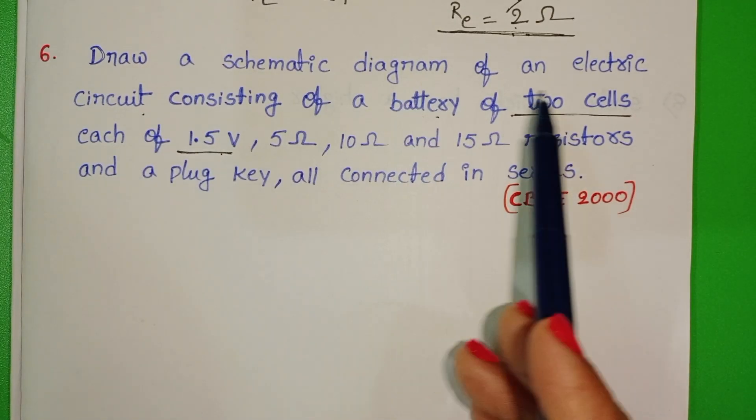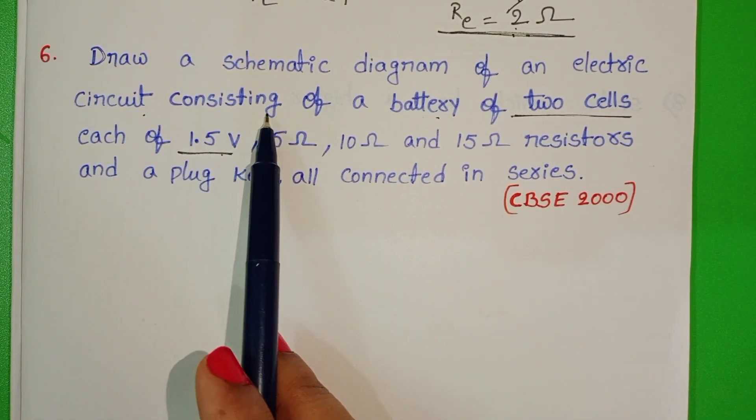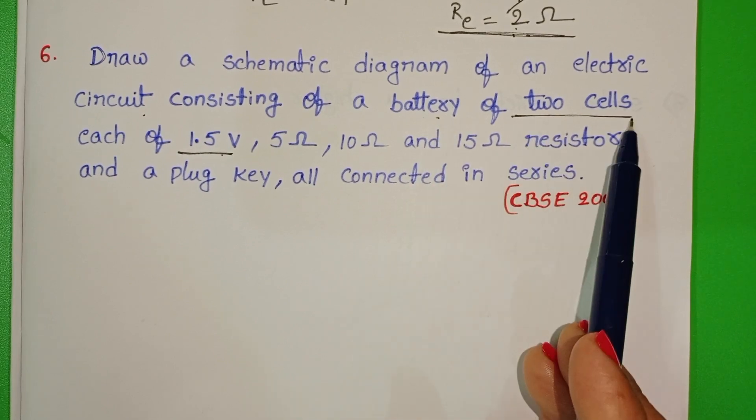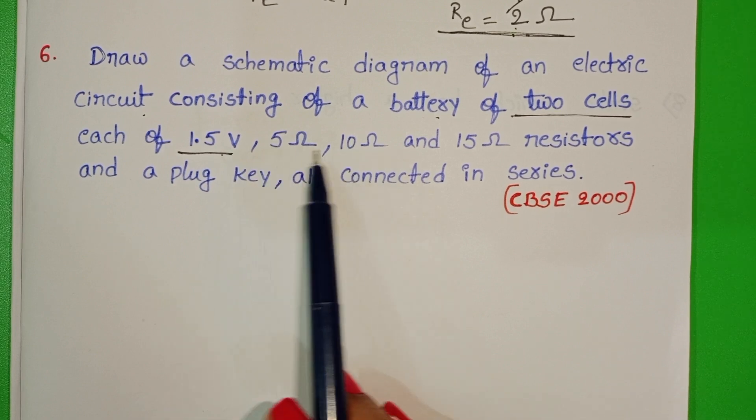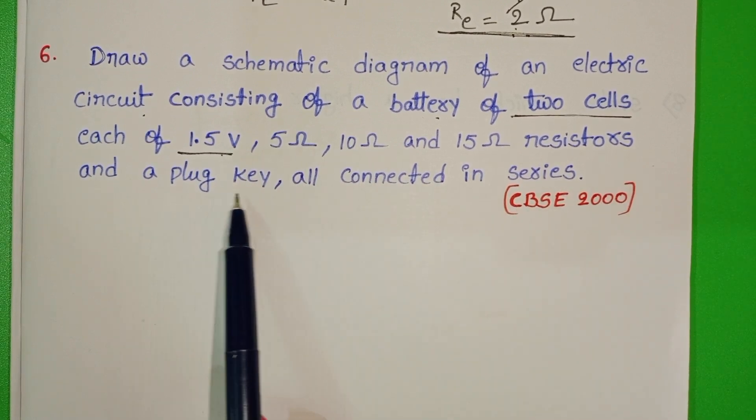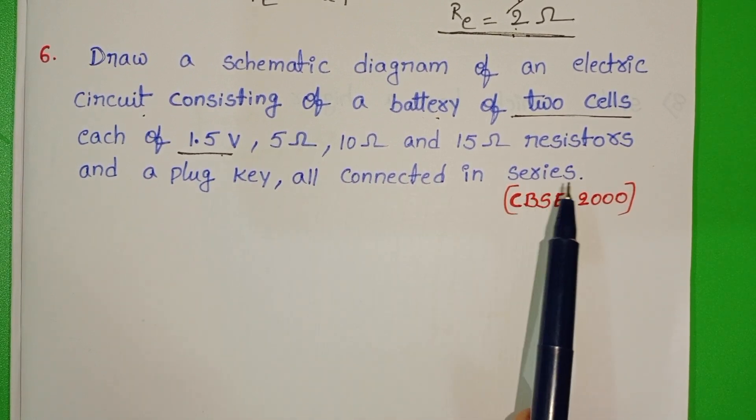Draw a schematic diagram of an electric circuit consisting of a battery of two cells, each of 1.5 volt, and three resistors and a plug key all connected in series.